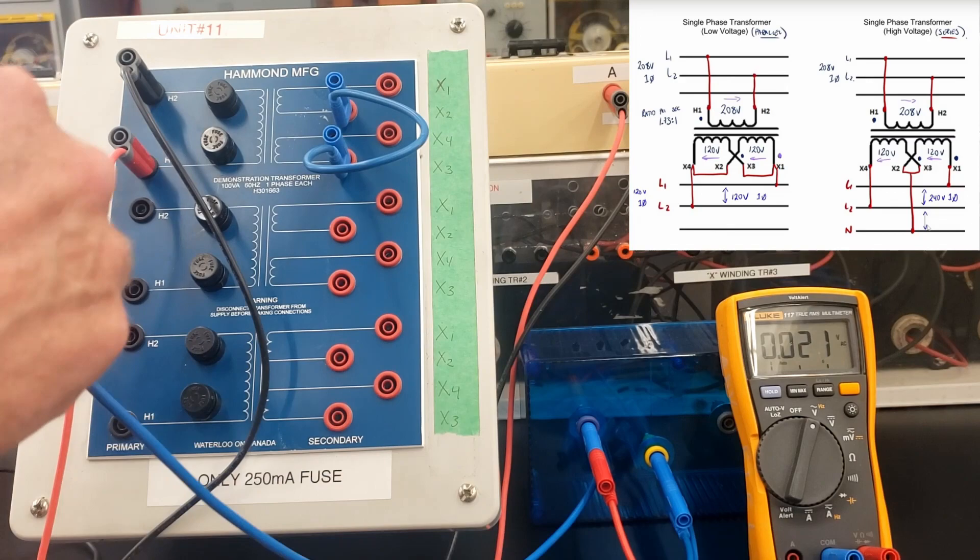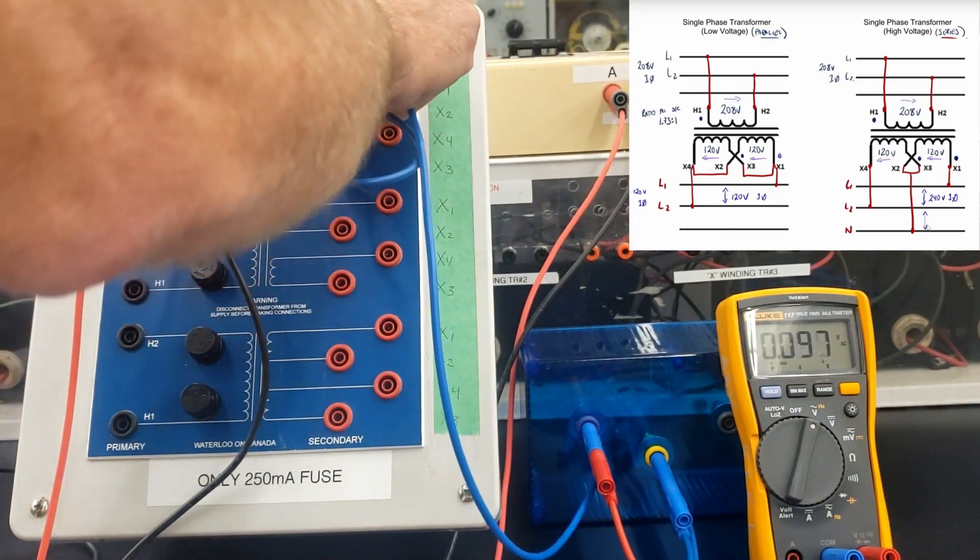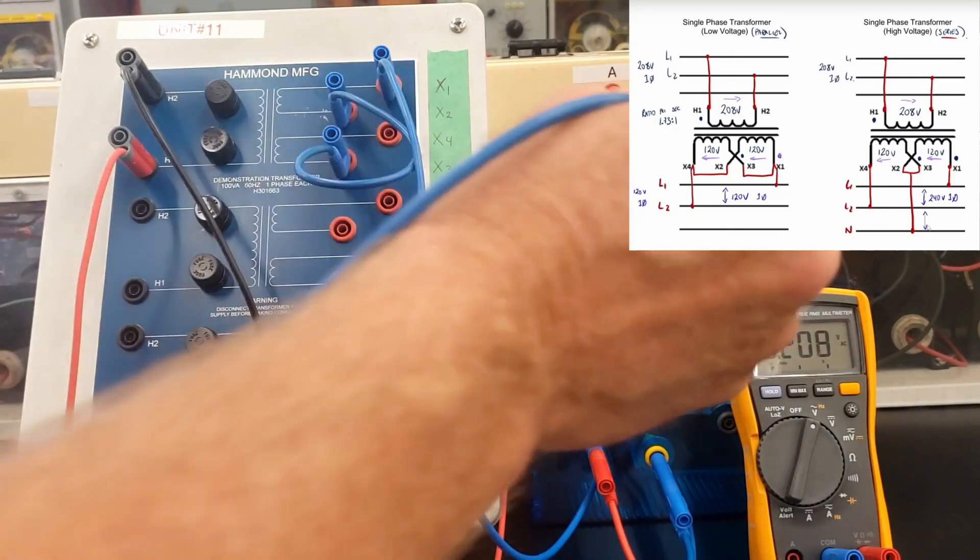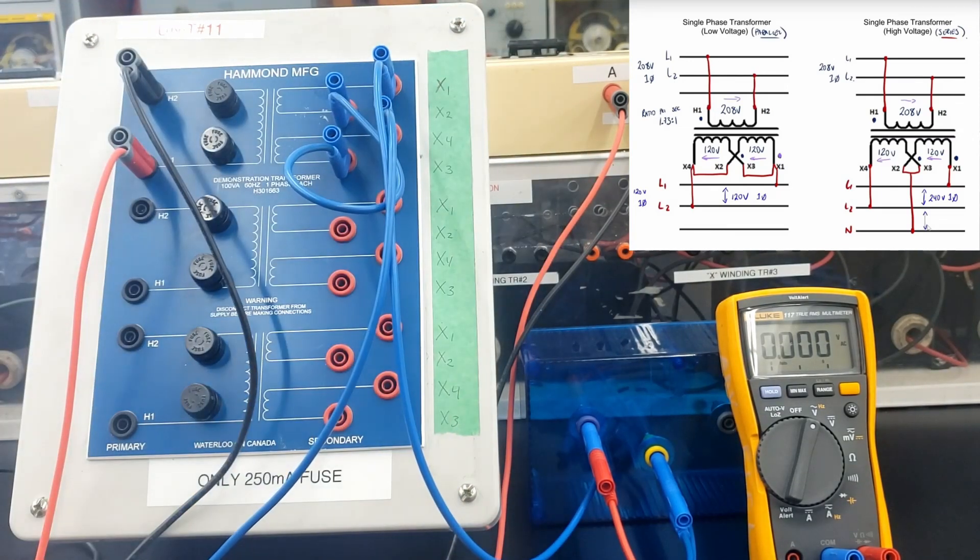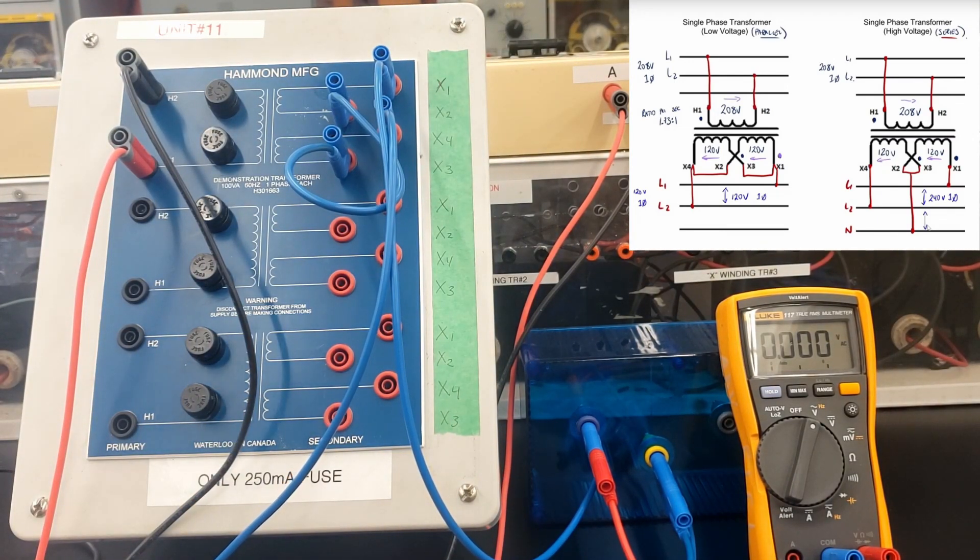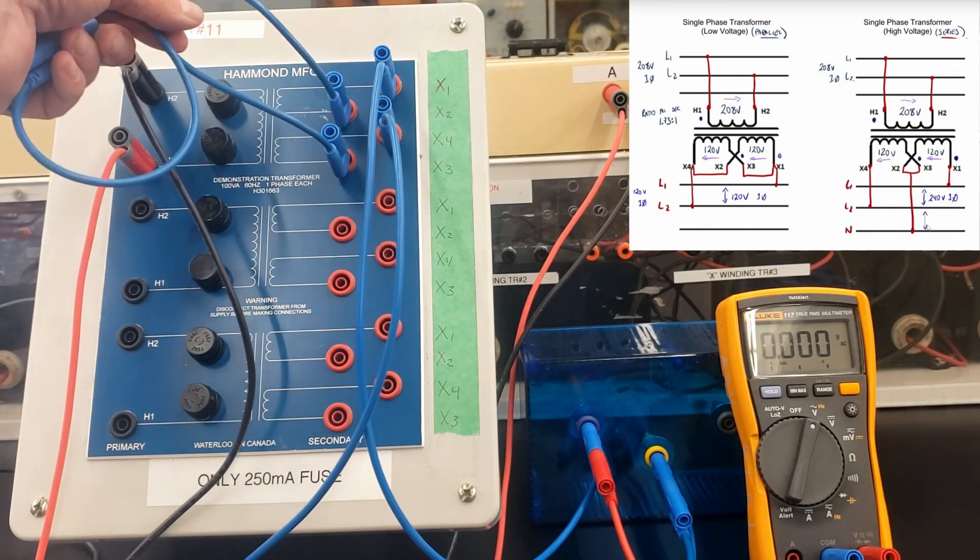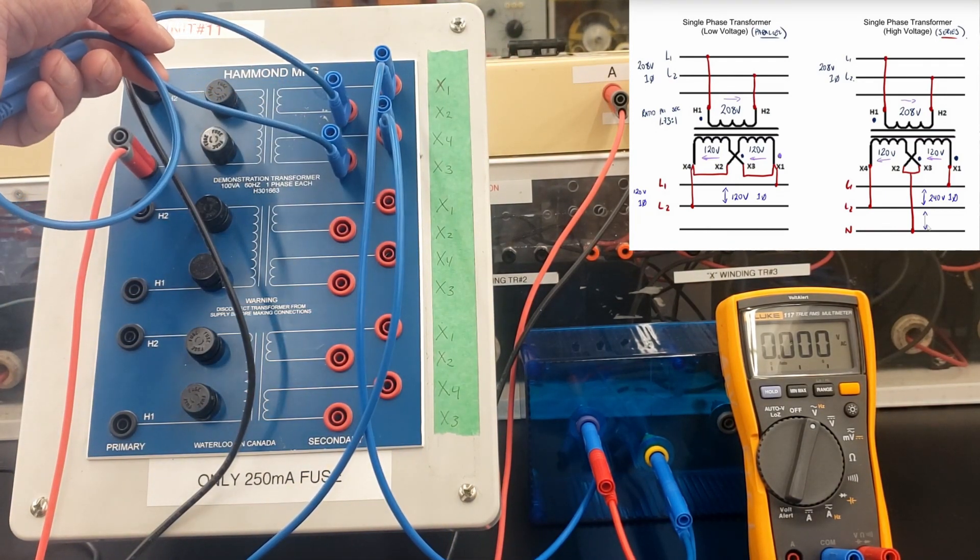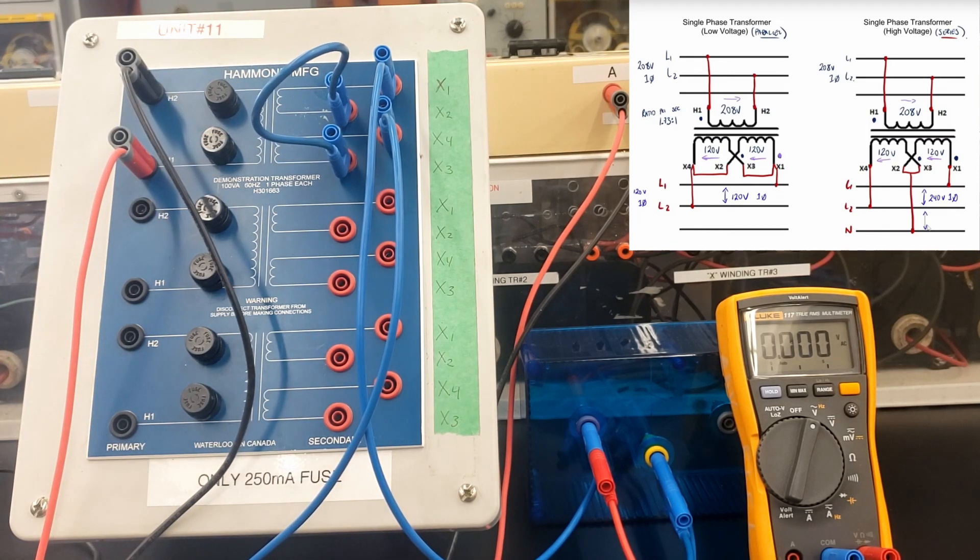The beauty of these transformers is that we can do, because they have two secondary windings, we can do both the low and the high voltage outputs for these guys. Low voltage always means parallel connection. High voltage always means the series connection. Let's check out the voltages here.